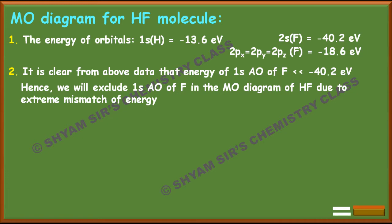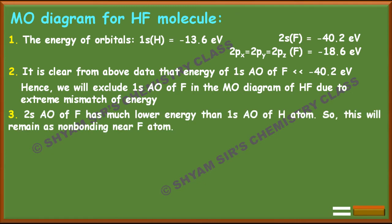The 2s atomic orbital of fluorine has much lower energy than the 1s atomic orbital of hydrogen atom, so it will remain as non-bonding near the fluorine atom and cannot form an MO with the 1s of hydrogen atom.